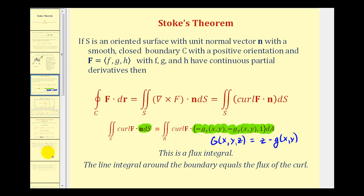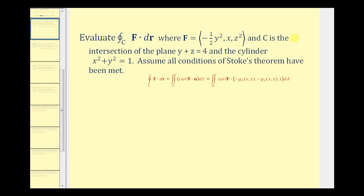Let's take a look at our first example. In this video we're going to use Stokes' Theorem to evaluate a line integral, so we'll be given a line integral and convert it to a surface integral. In this example we want to evaluate the line integral of F dotted with dr, with the given vector field, and C is the intersection of the plane y plus z equals 4 and the cylinder x squared plus y squared equals 1. We'll assume all the conditions of Stokes' Theorem have been met.